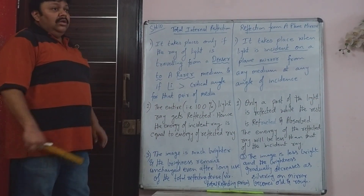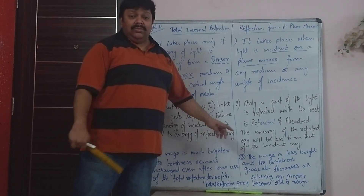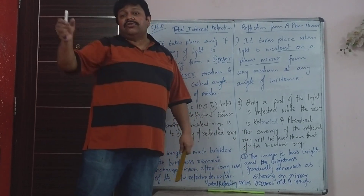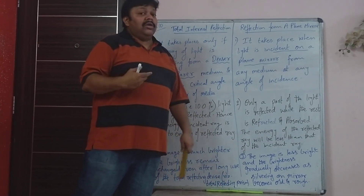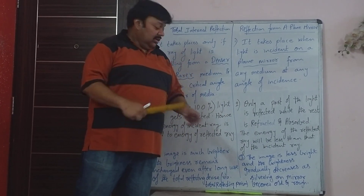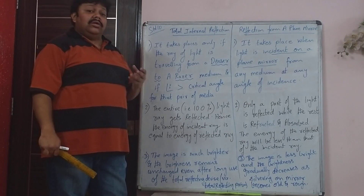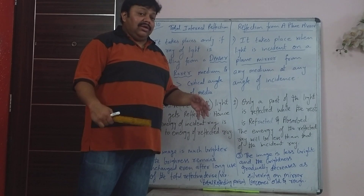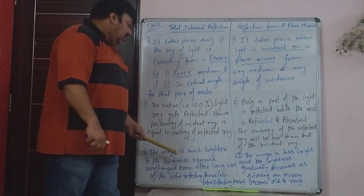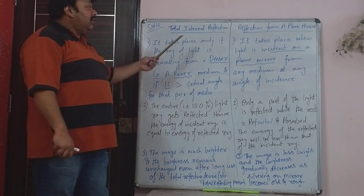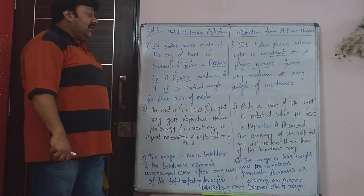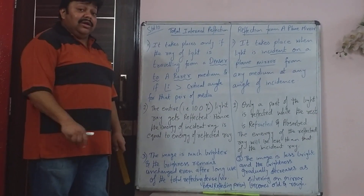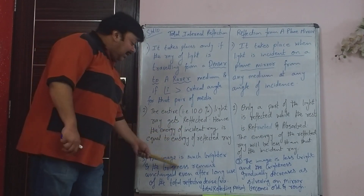And the last point — you would have seen in your bathroom mirrors where there is moisture, the silvering gradually fades off. Whenever there is humidity or moisture, the silvering gradually goes. Even in any mirror, gradually the silvering goes. So that doesn't happen in case of a total reflecting prism. That is the second advantage of total internal reflection.